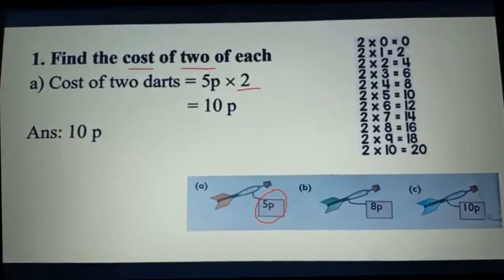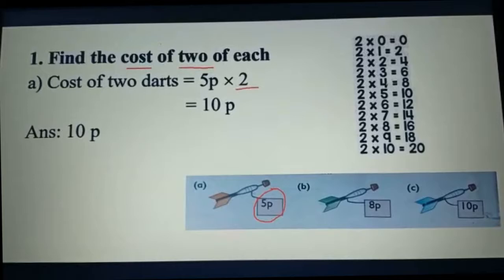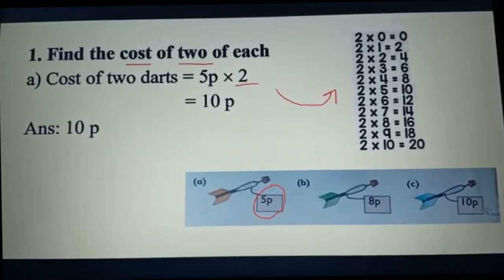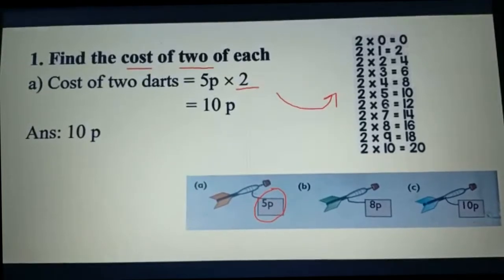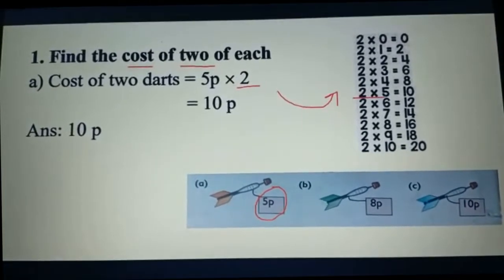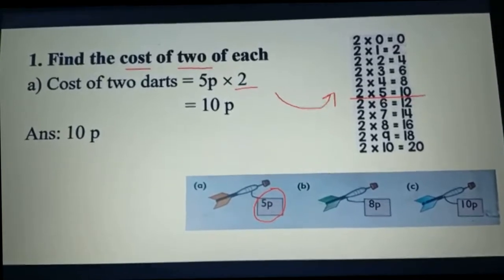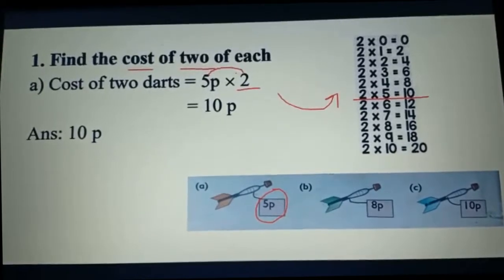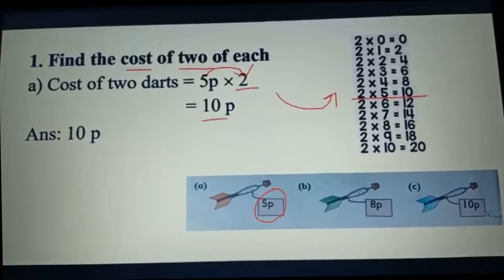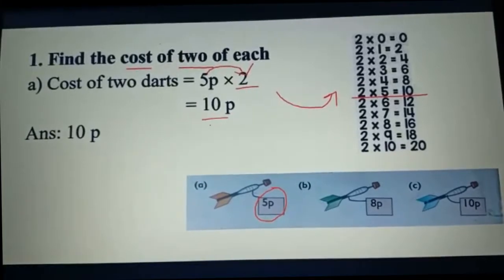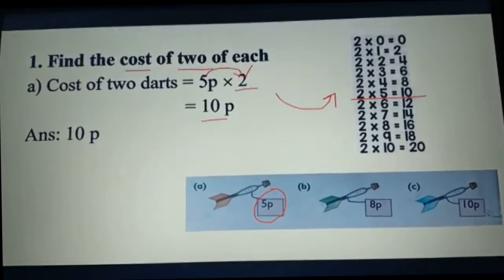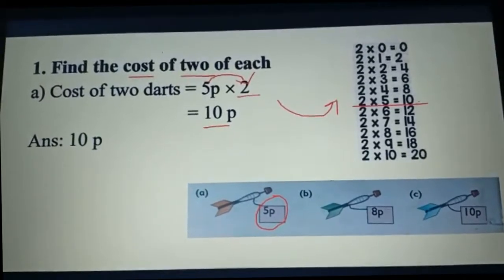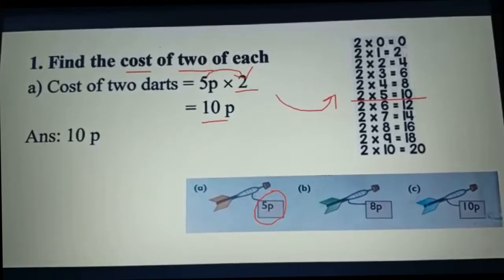Here we can see the times table of 2, so we can solve the problem from here. Two fives are ten, so if we multiply five by two we get the answer: ten pence. Because two fives are ten. You got it?